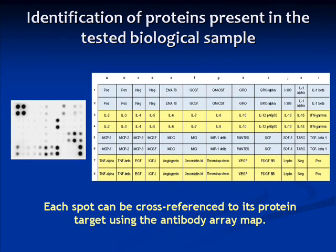This table is an example of an antibody array map. Each spot cross-references a particular map location, thus identifying the protein detected. The number of cytokines detected by an antibody array is typically between 10 and 100.